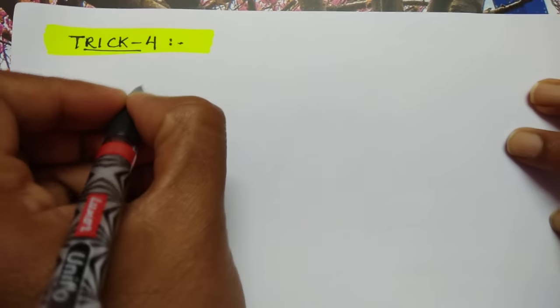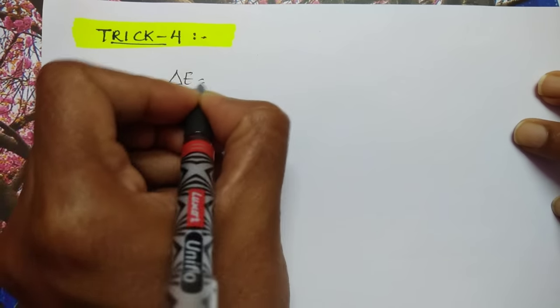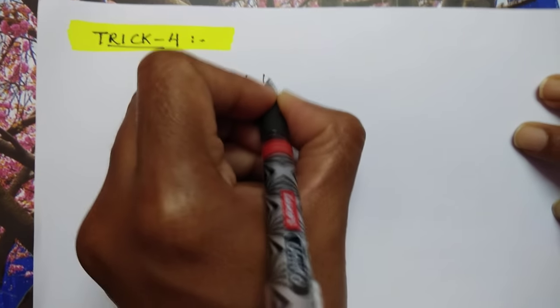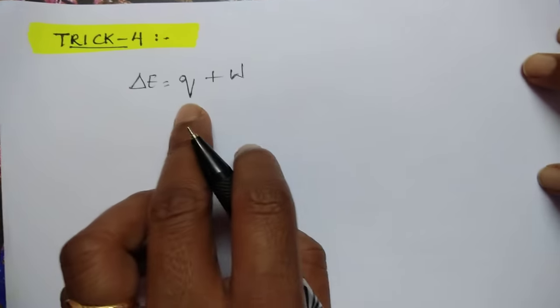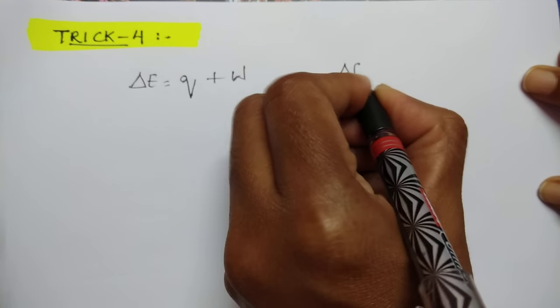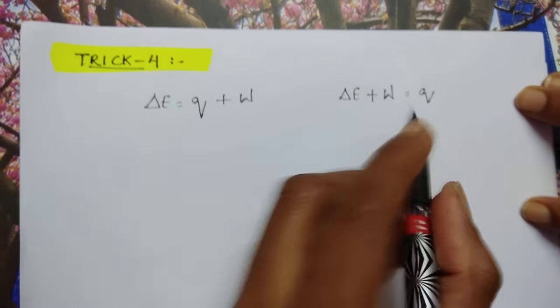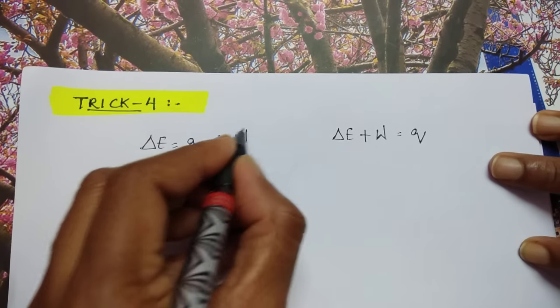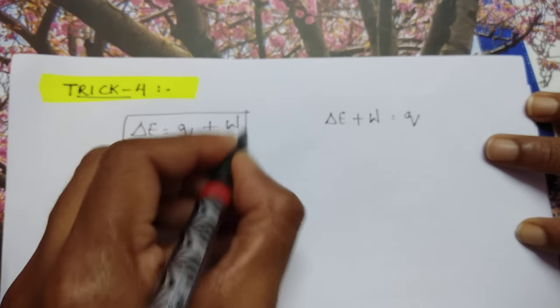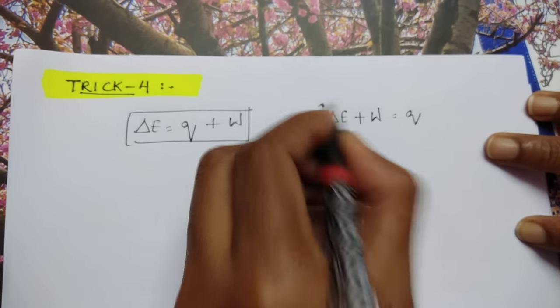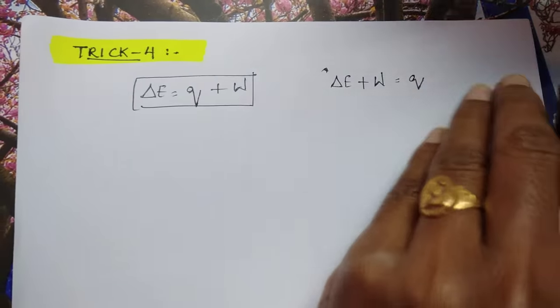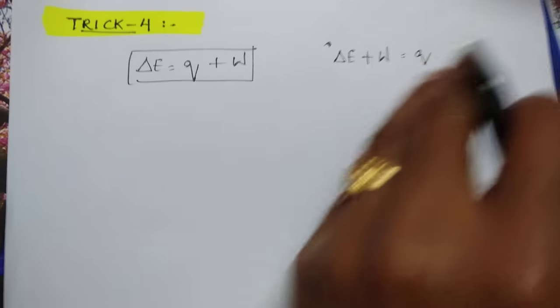Let us see trick number 4. As per the first law of thermodynamics, ΔE = Q + W. This is the chemistry formula. In physics the formula is ΔE + W = Q — if you use the physics formula in chemistry, it will be wrong.